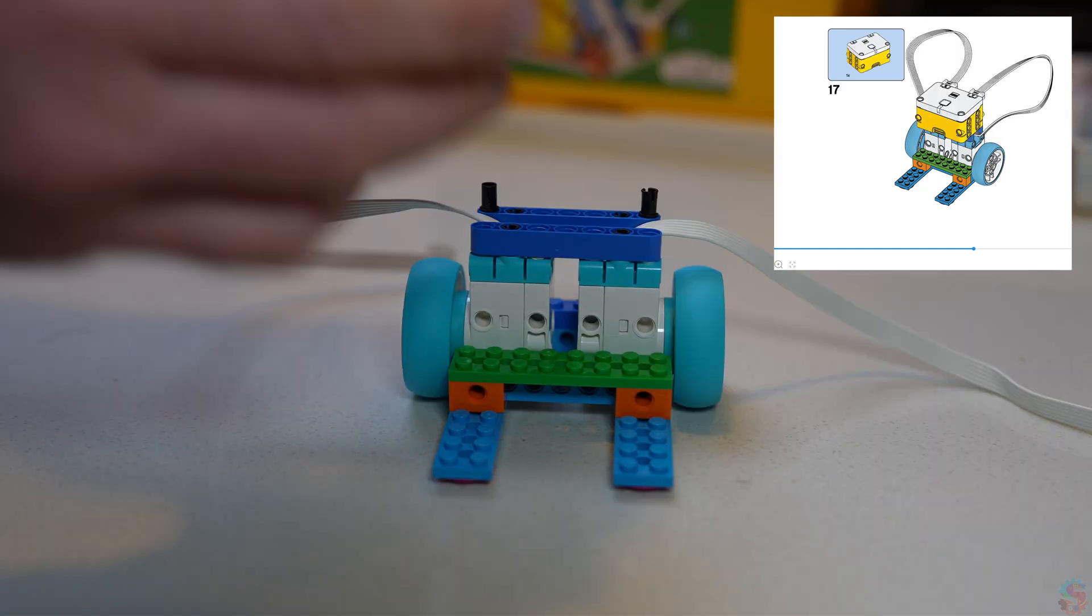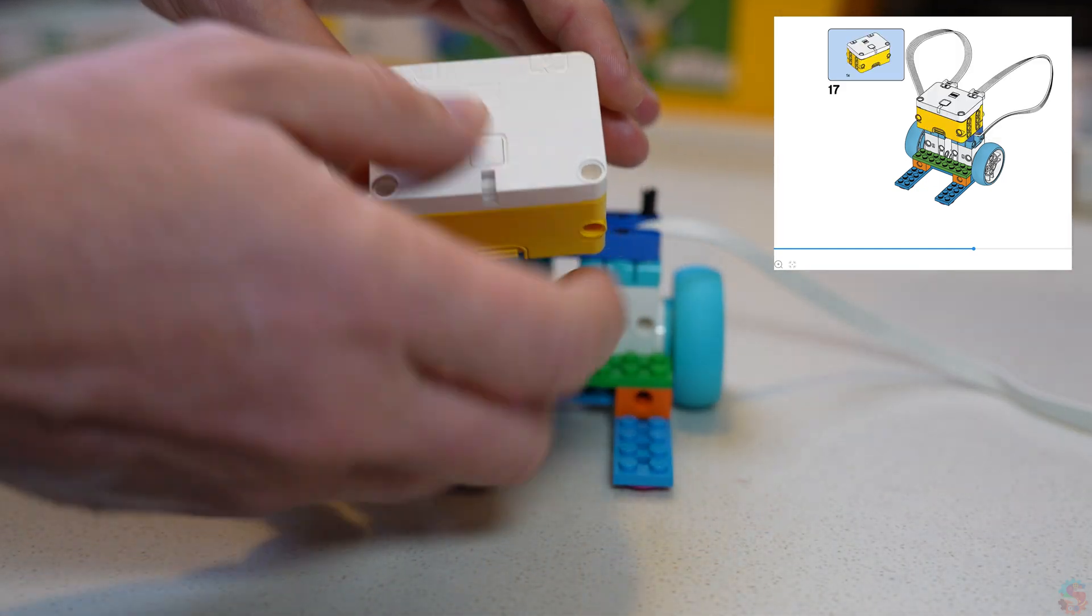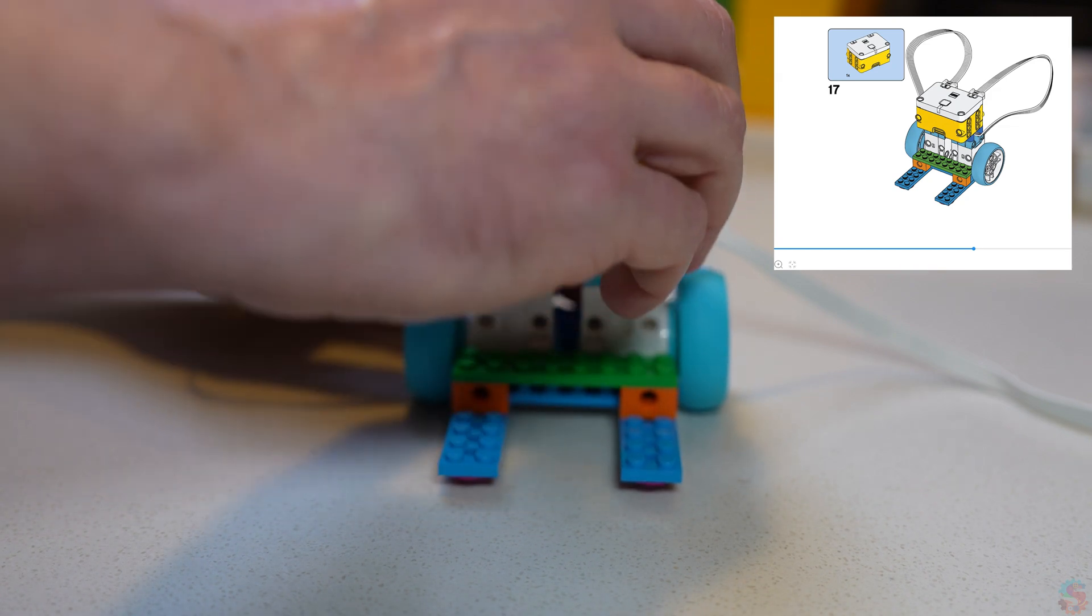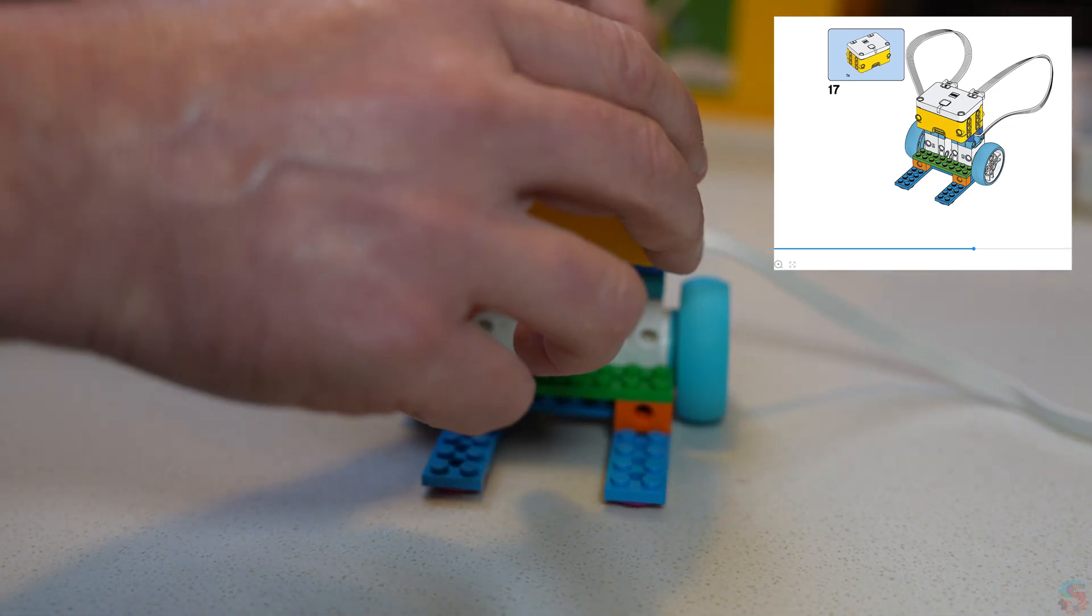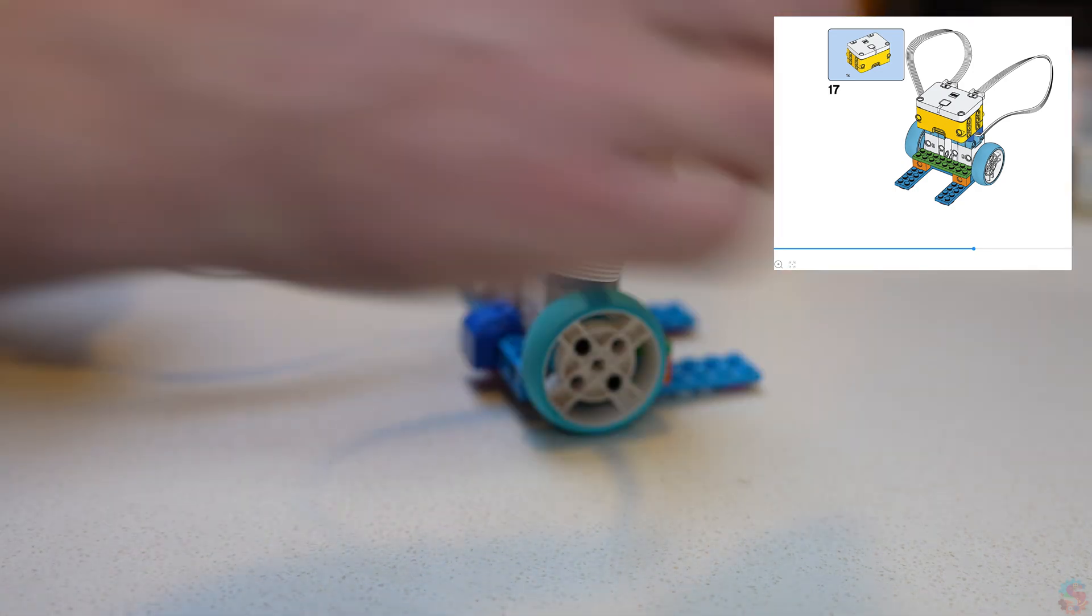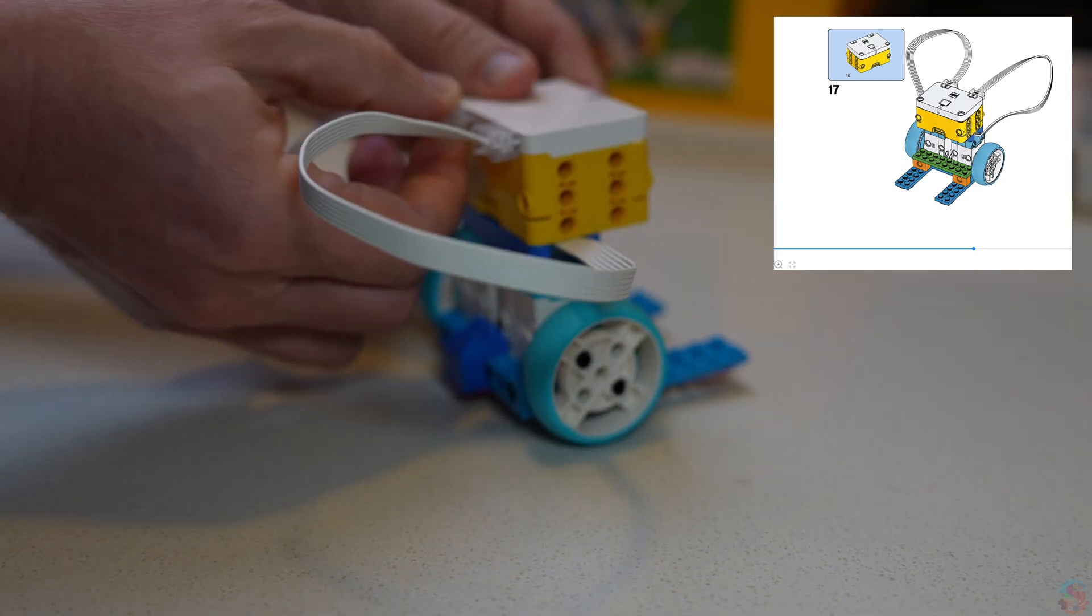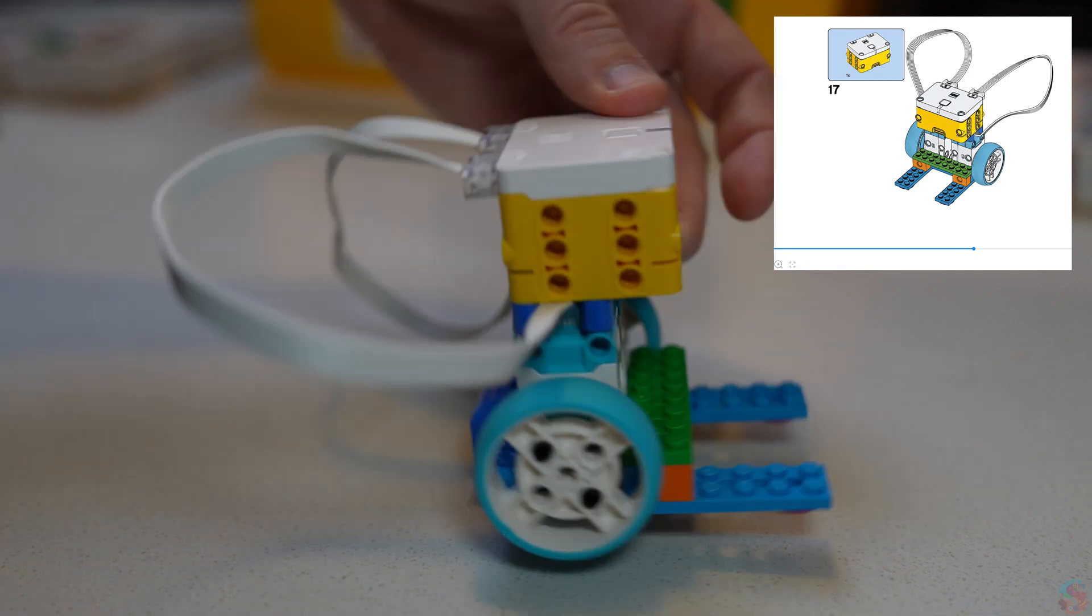Make sure the button and the light are facing forward or facing over those two legs that are facing out, and then on the back side you're going to plug in your motors. I see my motors plug in on the same side as that blue sloped piece.